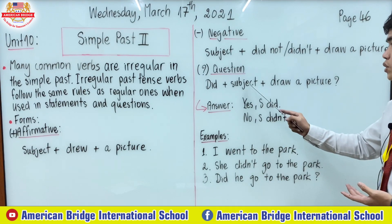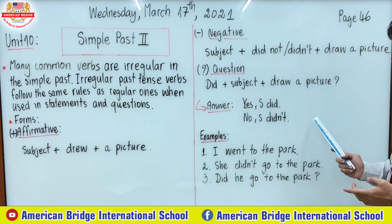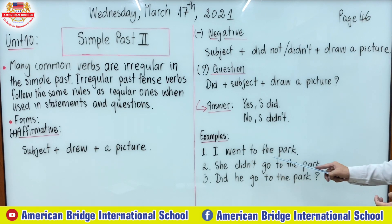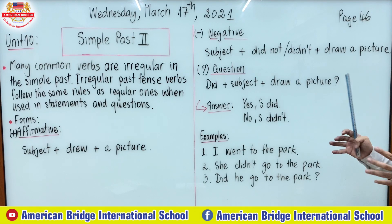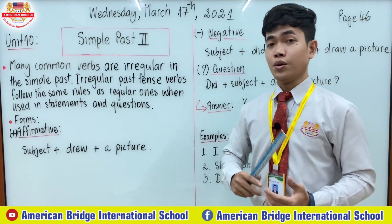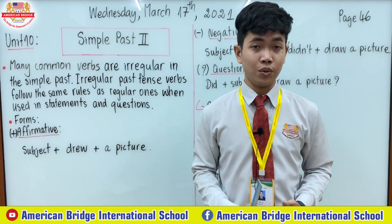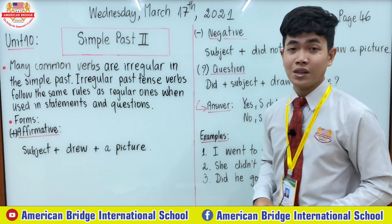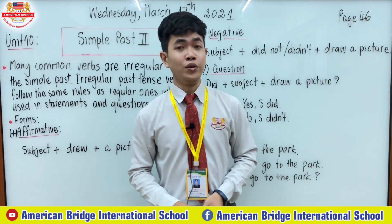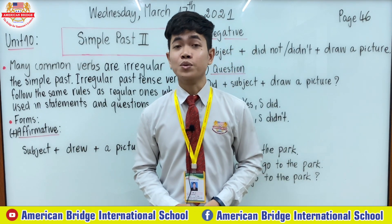Here are some sentence examples on the whiteboard. Number one: I went to the park. Number two: She didn't go to the park. Number three: Did he go to the park? So everyone, this is Simple Past 2 in our second video. In the next video we are going to practice exercises on page 46. Thank you for your time in today's online class. Have a good day and stay safe. Goodbye everyone, see you tomorrow!